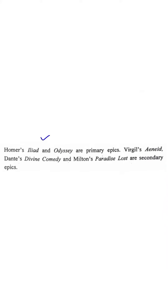Homer's Iliad and Odyssey are examples of primary epic. Virgil's Aeneid, Dante's Divine Comedy, and Milton's Paradise Lost are examples of secondary epic.